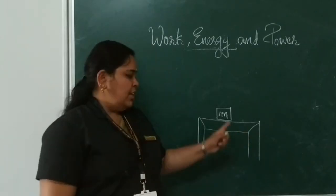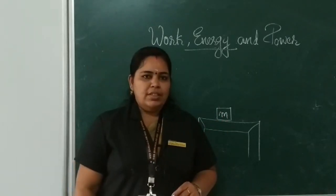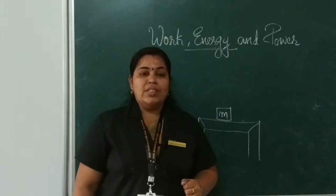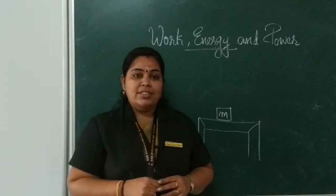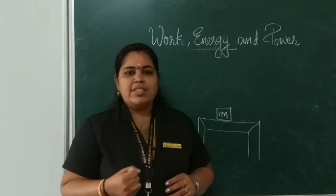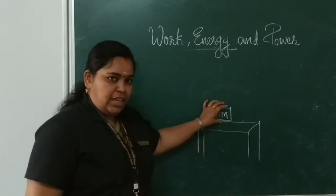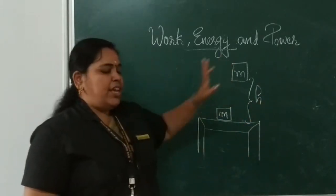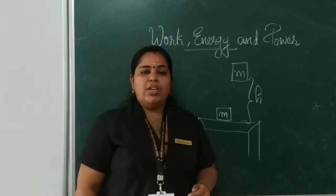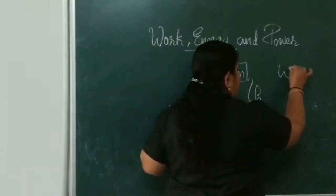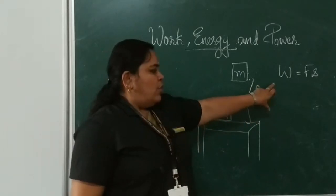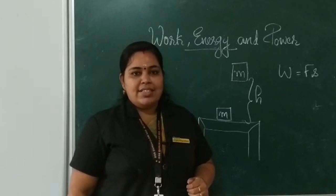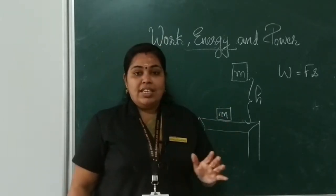Now look at this figure. A body of mass M kg is kept on a table. The table is exerting a force in the upward direction, and gravitational force is acting in the downward direction. If this body is raised to a height of H meters, we know W is equal to F into S. Here we are doing work against gravitational force. F is equal to mg, so work done W is equal to mgh.